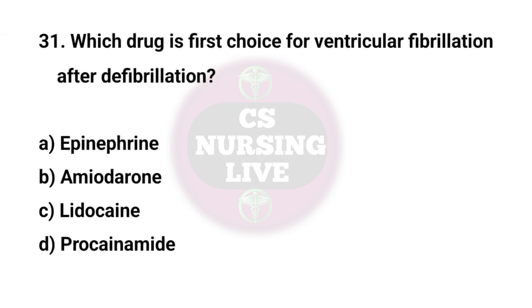Question No. 31. Which drug is first choice for ventricular fibrillation after defibrillation? Right answer is D. Amiodarone.